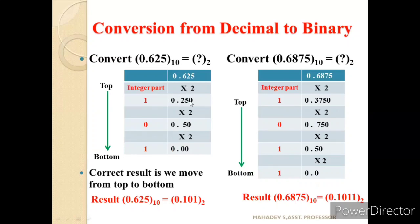When we multiply 0.625 by 2 we get 1.250 — the integer part 1 is kept separate and the fractional part 0.250 continues. Multiplying 0.250 by 2 gives 0.5, integer part is 0. Multiplying 0.5 by 2 gives 1.0, integer part is 1. Since the fractional part is 0 we stop. Reading from top to bottom, 0.625 base 10 equals 0.101 base 2.